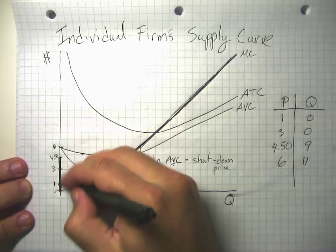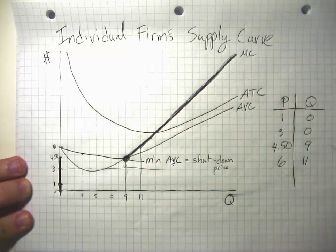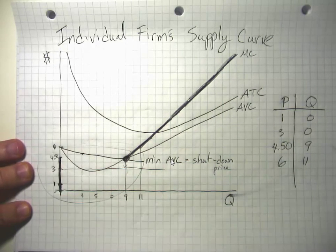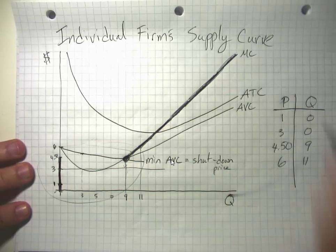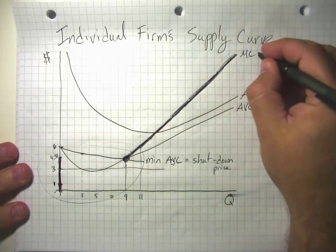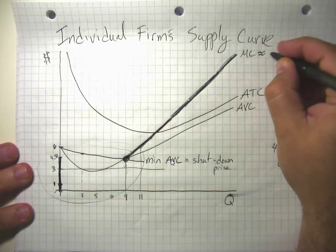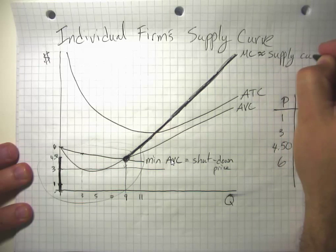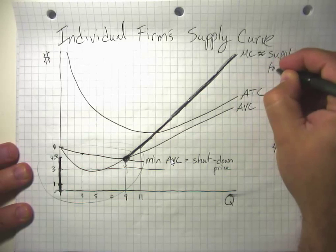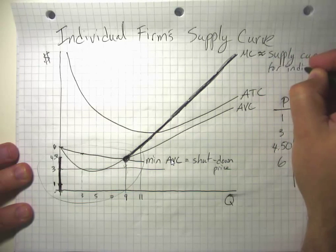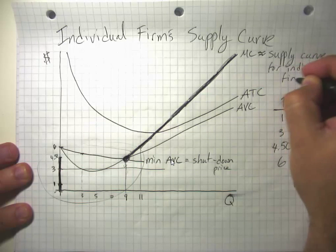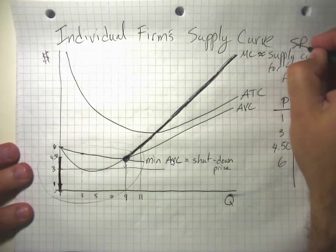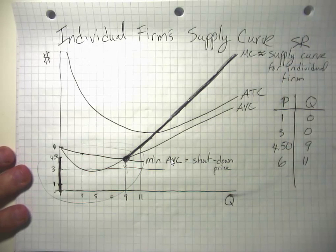Further price rises cause this firm to be willing to supply an amount based upon its marginal cost curve. This heavily shaded line is this firm's supply curve. Except for the weird stuff around the bottom, mostly the marginal cost curve is approximately the same thing as the supply curve, or more properly, the short-run supply curve for the individual firm.